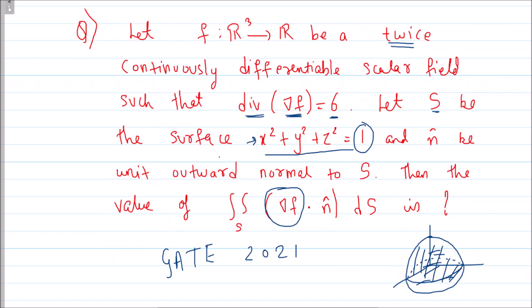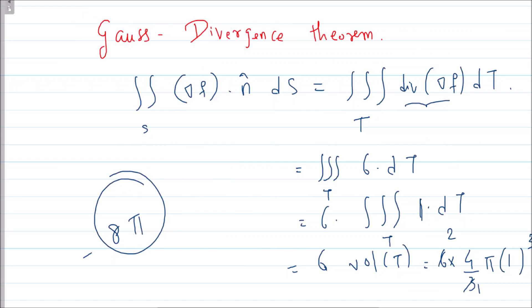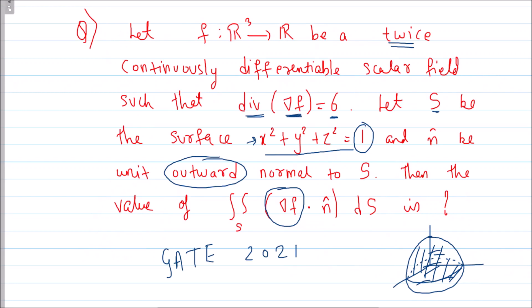Okay, suppose if they would have said inward normal, in that case the answer would have been minus 8π. So I hope this is clear. If you have any doubt in this, you can ask me in the comment section. Thank you.